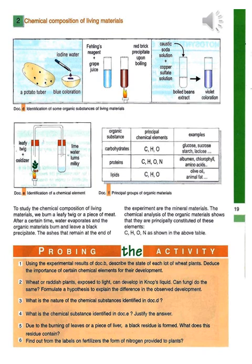On the left, the iodine test is applied by adding iodine water to a potato tuber, giving a blue coloration — indicating that starch is present in the potato. In the middle, Fehling's test gives a brick-red precipitate upon boiling when Fehling's reagent is mixed with grape juice, indicating that reducing sugars are produced by grape plants.